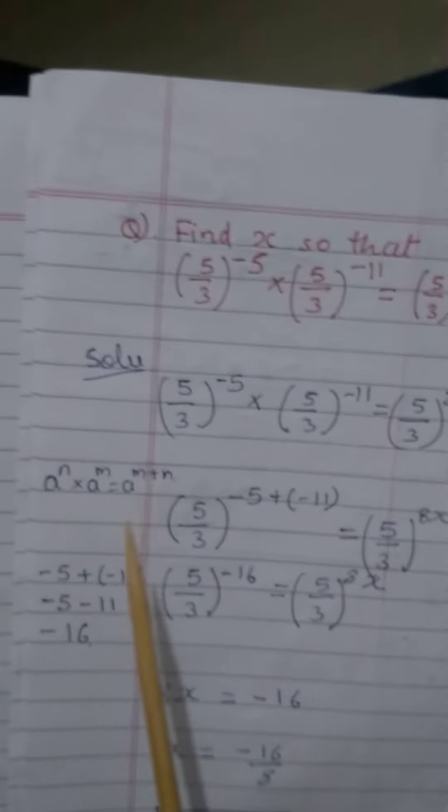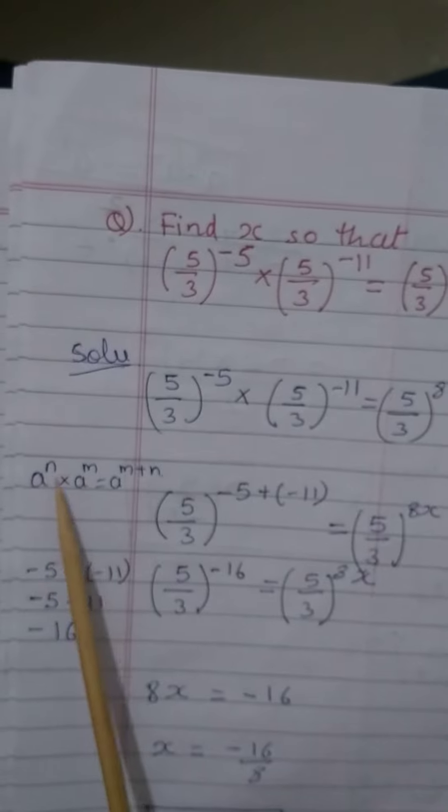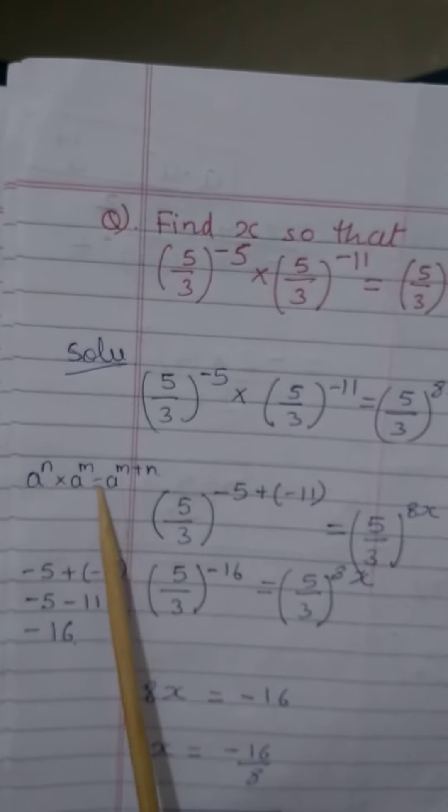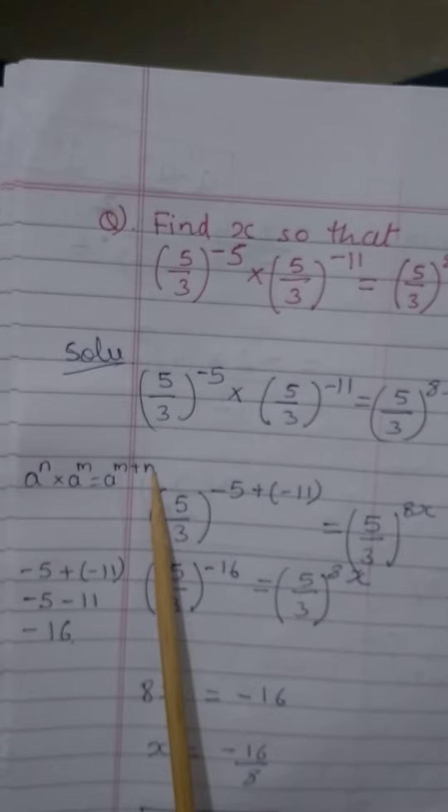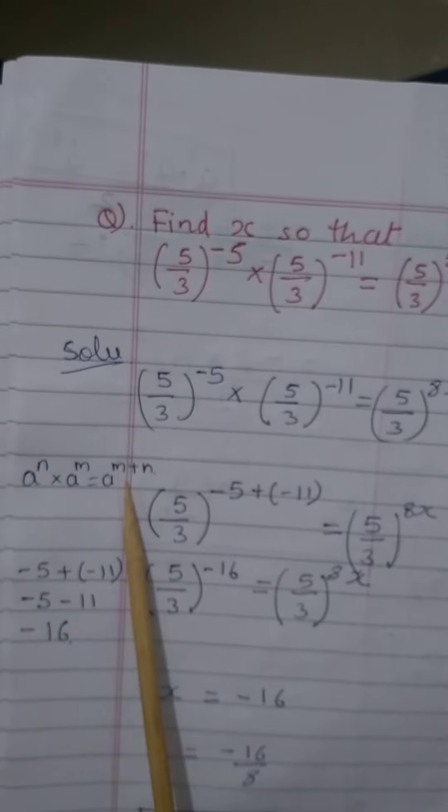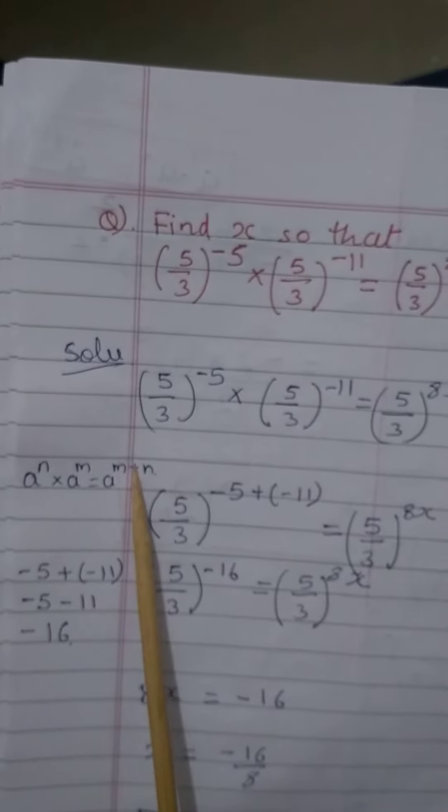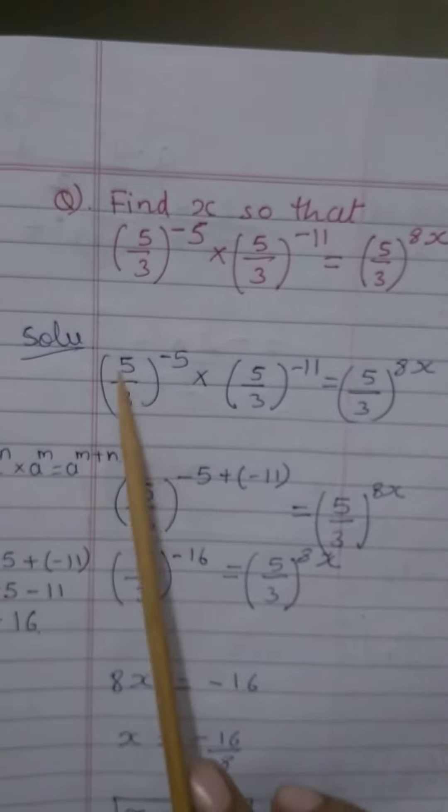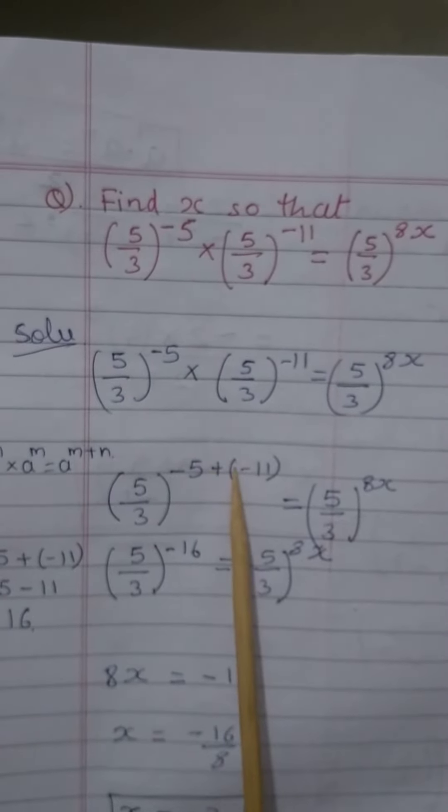So there is identity, a raised to n into a raised to m is equal to a raised to m plus n. So if the base is common, the power is added. So here the bases are common, so power is added.